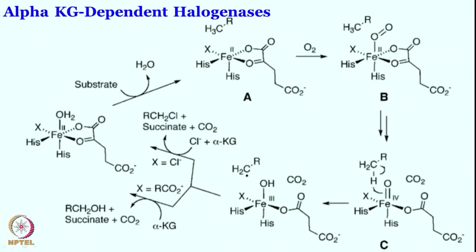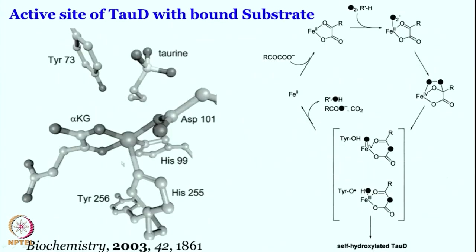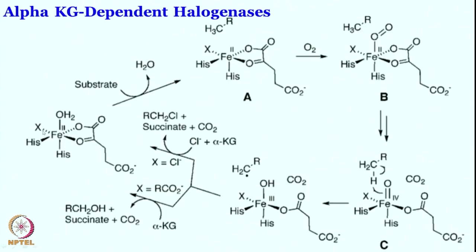There is a series of enzymes or reactions that can happen if you have a little twist in your active site. Previously with the alpha-KG dependent hydroxylases or oxygenases we had two histidines and one aspartate. Now, what if this aspartate is removed and replaced with a halide? This becomes a completely different enzyme — this is called an alpha-KG dependent halogenase. A halogen is sitting there instead of aspartate, and of course you still need alpha-ketoglutarate.